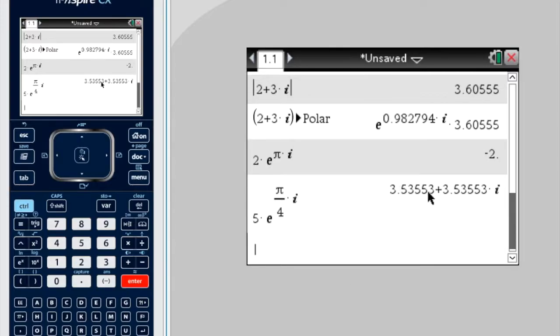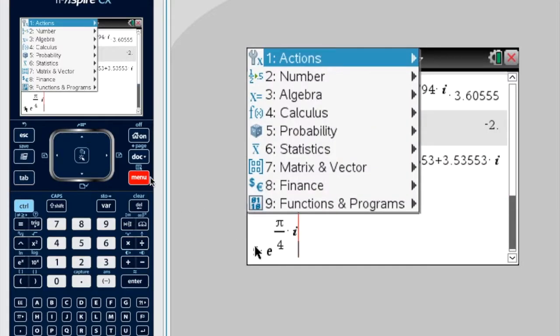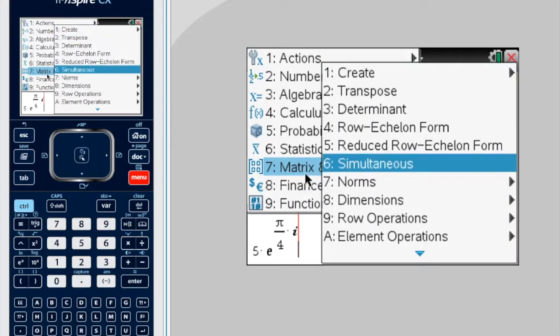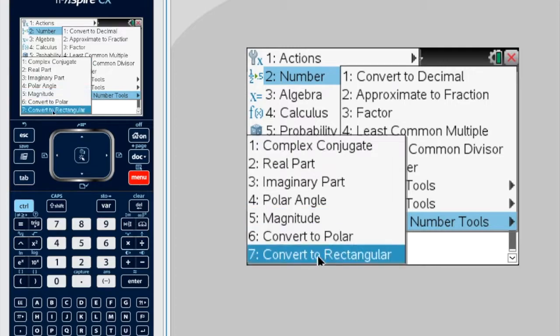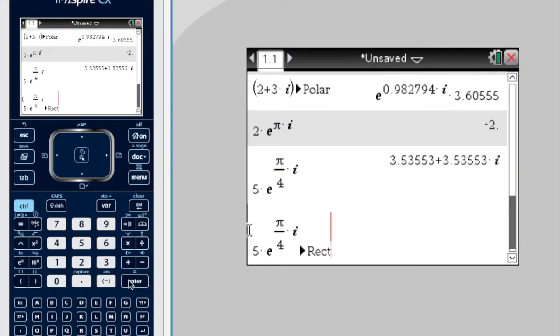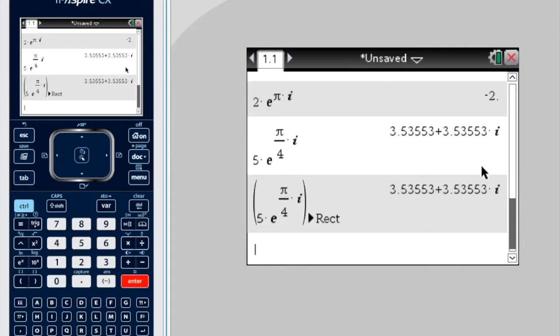Ah, they automatically give it to me in rectangular form. So let's see if we can try that again. So if I select that and then say menu, sorry, number, complex number tools, convert to rectangular, enter. You get the same thing.